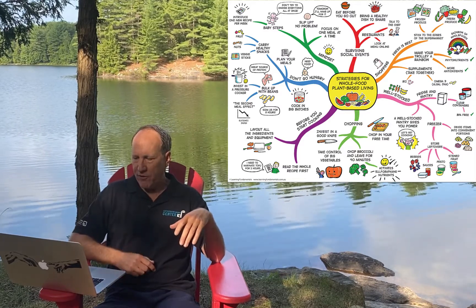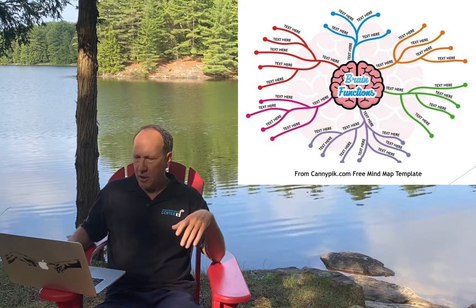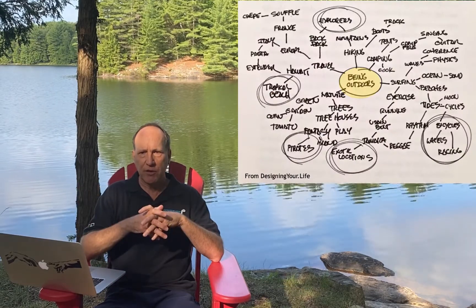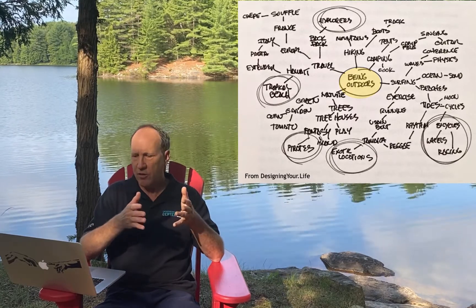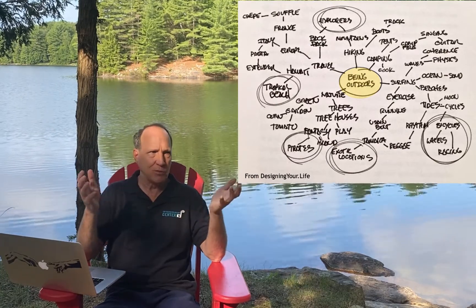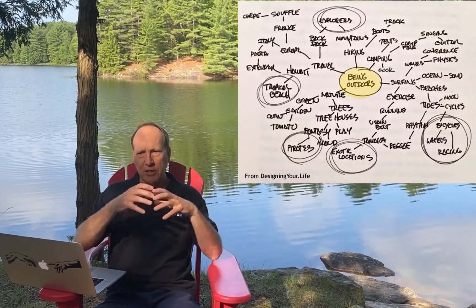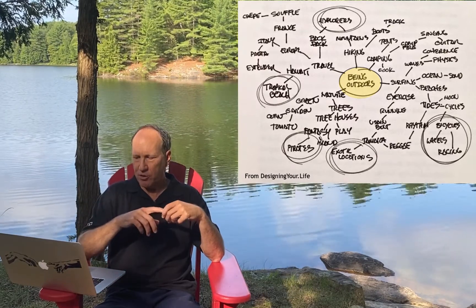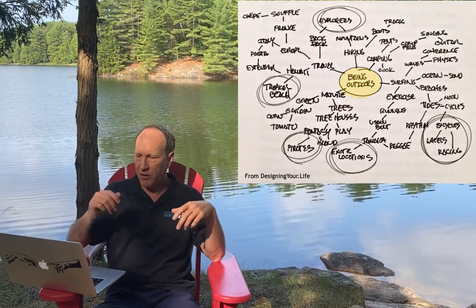Here's another example I found online from Cannypix — a template you can use for your own mind map. Here's an example I drew from designingyour.life. This was a specific mind map where someone was trying to ideate around a career being outdoors, and he didn't know exactly what that meant. But by going through increasingly divergent branches off of "being outdoors," this person came up with things like a tropical beach, exotic locations, or even pirates and things like that.